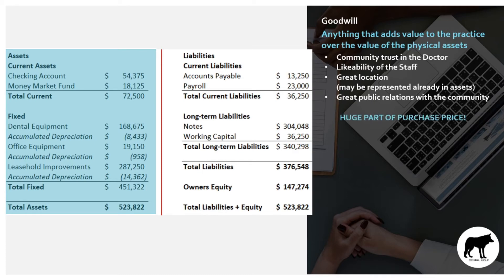So why is goodwill so important to understand? It's because it's a huge part of the purchase price. There's going to be a lot of negotiations when you go to buy a practice over what the goodwill actually is. Typically you'll have someone go in and value the assets of that practice — they might say the dental chairs are worth this much. But there's going to be a lot of leeway in the valuation, so you might attribute 50% of the purchase price to goodwill, or as little as 20%.